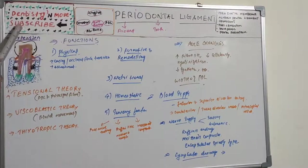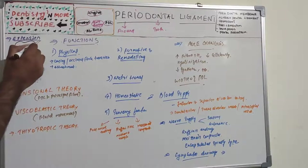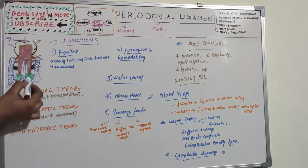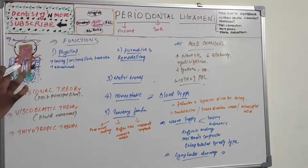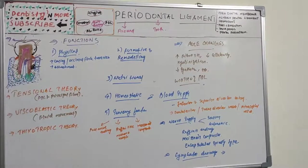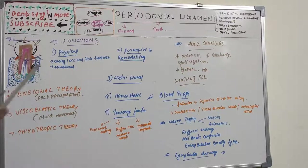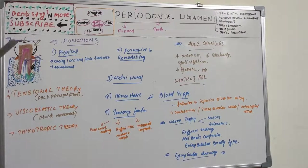The force occurring at the occlusal side is transmitted to the bone through the PDL. Additional physical functions include: attachment of teeth to the bone, maintenance of gingival tissue in proper relationship with the teeth, and resistance to the impact of occlusal forces.